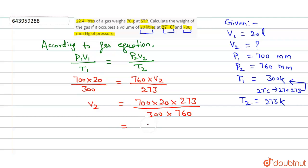And you will have the value of V2 as 16.76 liters. After calculating this, simplifying this, you will have V2 is equal to 16.76 liters.